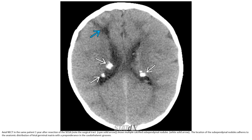Non-enhanced CT in the same patient following resection of the giant cell mass shows multiple calcified subependymal nodules. Note that the location of the subependymal nodules adheres to the anatomic distribution of the caudal germinal matrix, with a preponderance in the caudothalamic region.